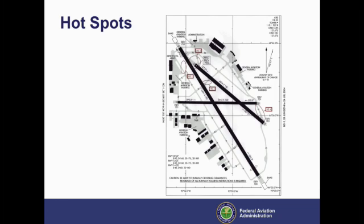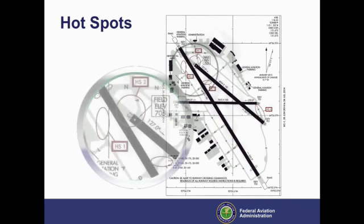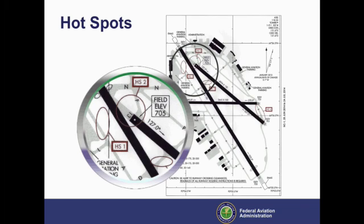A hotspot is a location on an airport movement area with a history of potential risk of collision or runway incursion, and where heightened attention by pilots and drivers is necessary. Relying on heightened attention by pilots is not an adequate long-term solution to hotspots — non-standard geometries must be corrected. Any of the design flaws we have discussed can be designated as a hotspot. Hotspots are identified in FAA airport diagrams, using circles and labels to highlight them.